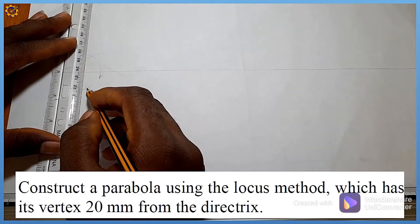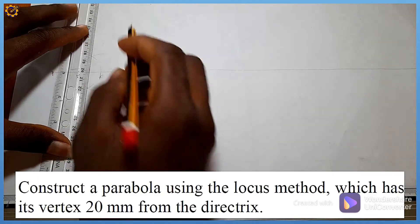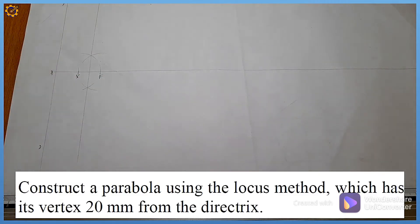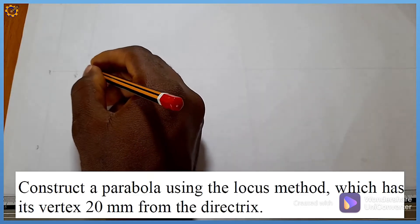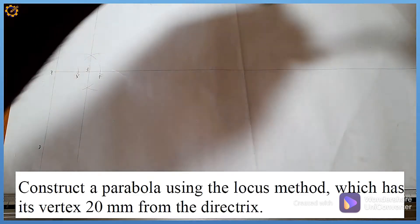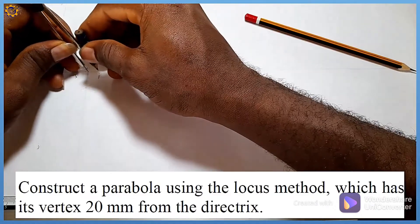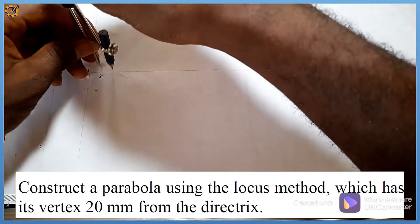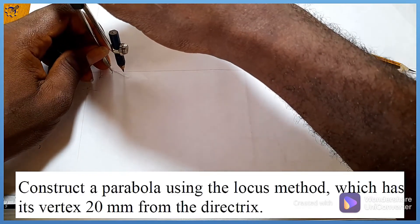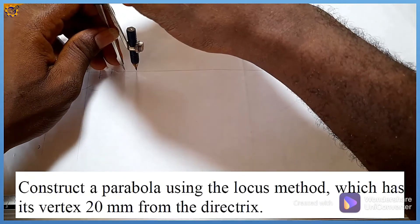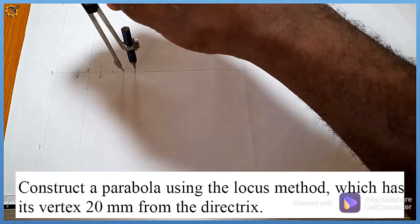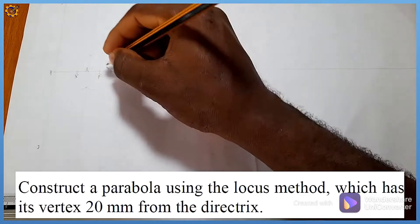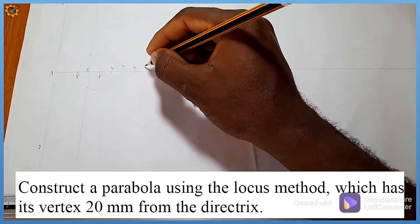We are told that two points form a straight line, so joining those two points together like this. This junction I name junction 1. My next procedure is to pick the distance between V to 1 or F to 1, then replicate it four other times. I'm having mark 2, mark 3, mark 4, let me extend it to 5.